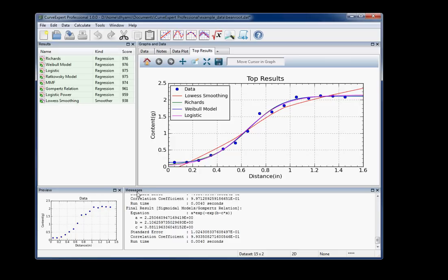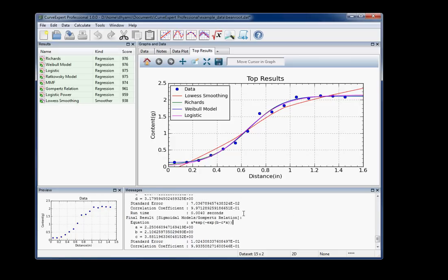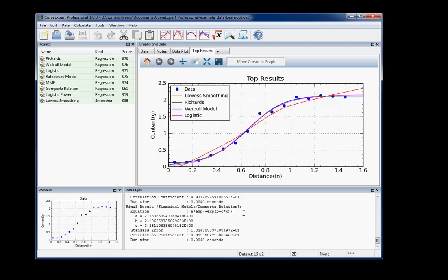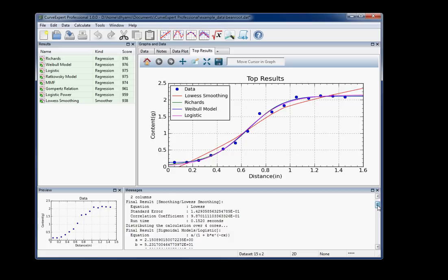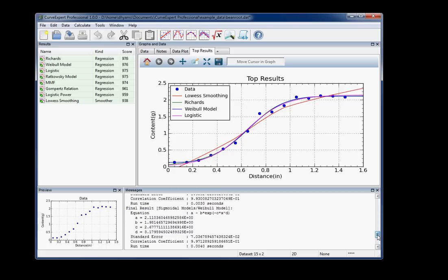And one window that I didn't get to down here was the Messages window, which shows you what CurveExpert happens to be wanting to communicate to you back at the time. Here, it just gives results of the different regressions that we just calculated.